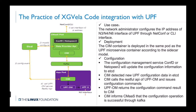Lastly, we use the open-source code XGVela in the UPF configuration process and integrate the configuration as a service (CMAS) with UPF. The network administrator configures the IP address of N3, N4, and N6 interfaces of UPF through NETCONF or CLI. The same container is deployed in the same pod as the UPF microservice container according to the sidecar model. The configuration management service (confd or netopeer2) updates the configuration information to etcd. SIM watches for new UPF configuration data in etcd, calls the RESTful API of UPF-OM, and issues configuration commands. UPF-OM returns the configuration result, and SIM informs CMAS that the configuration operation is successful through Kafka.